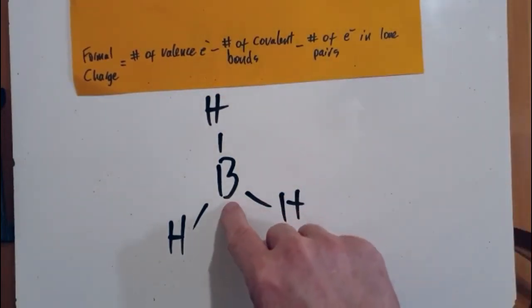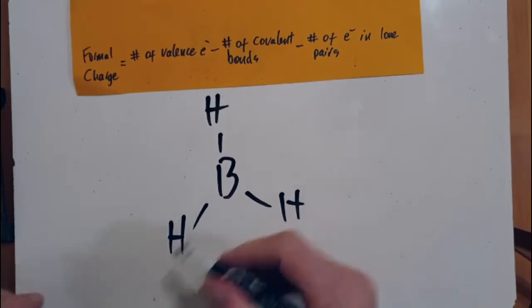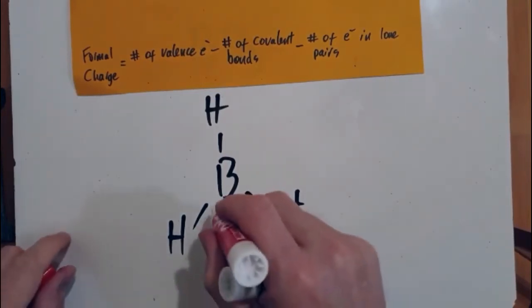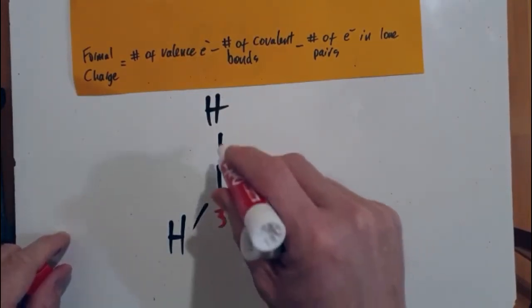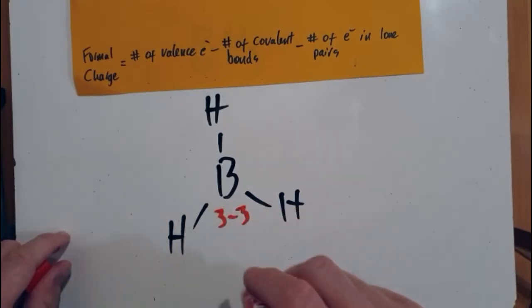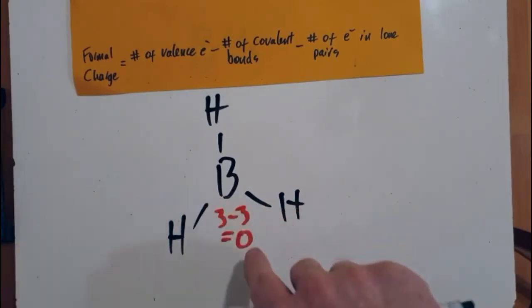So the calculation for formal charge is the number of valence electrons. In this case, it's going to be three for boron minus the number of bonds, three, and there's no lone pairs. So overall, boron is going to have a formal charge of zero.